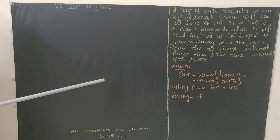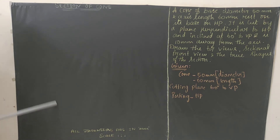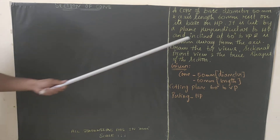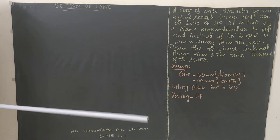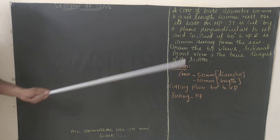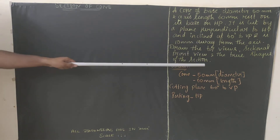It is cut by a plane perpendicular to HP and inclined at 60 degrees to VP, so the cutting plane will be 60 degrees to VP. The base diagram will be drawn in HP — we'll be drawing a circle here. The cutting plane is inclined with respect to VP and is 10 mm away from the axis. We need to draw the top view, sectional front view, and true shape of the section.